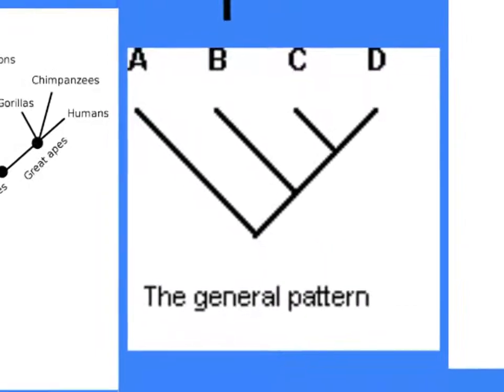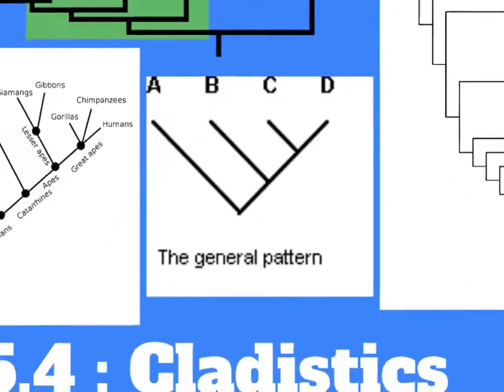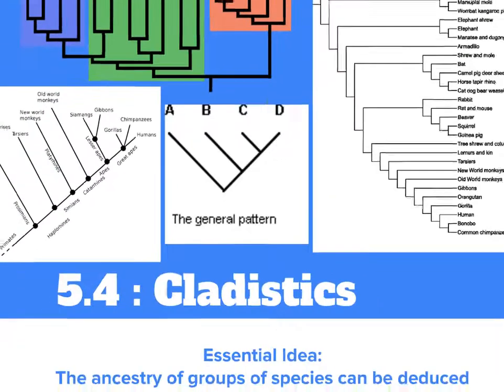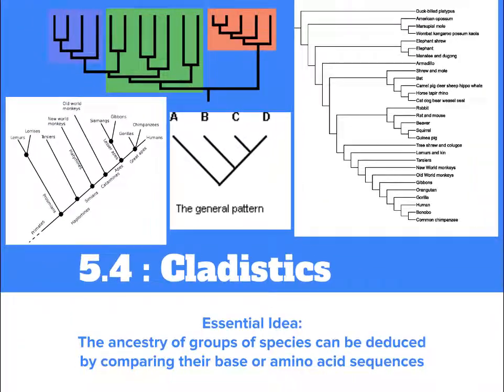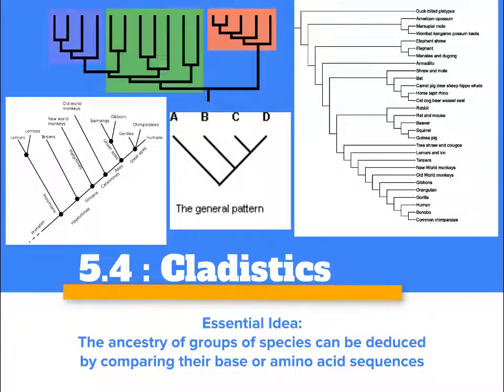It's a simple analogy, but it's a good way to organize and classify things. As we learned in 5.3, biologists love to classify and organize and make sense of living things. So today we are going to explore a related organizational strategy called cladistics.